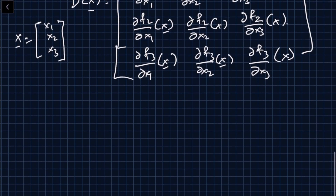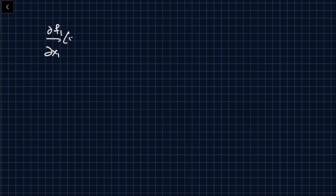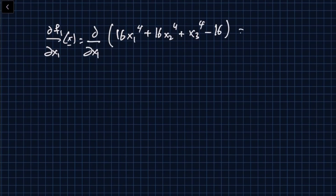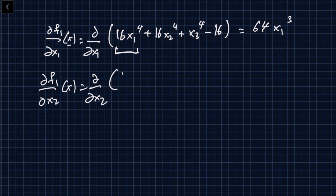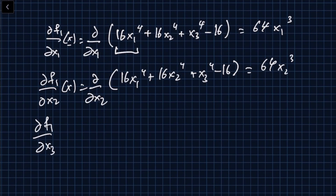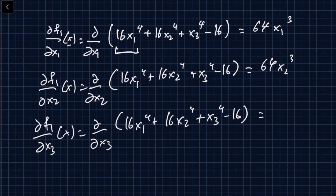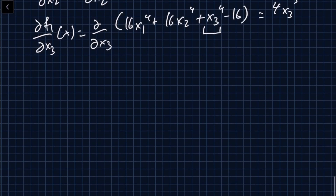Computing the first row of D: ∂f1/∂x1 = 64x1³ (since 4×16 = 64), ∂f1/∂x2 = 64x2³, and ∂f1/∂x3 = 4x3³, since those are the only terms in f1 that depend on each respective variable. That completes the first three partial derivatives.